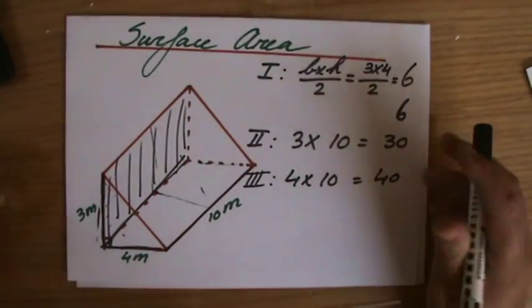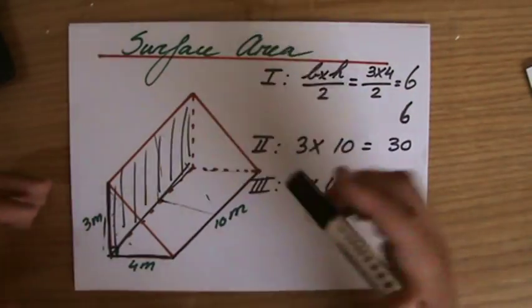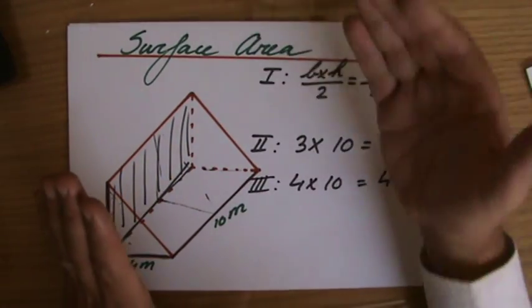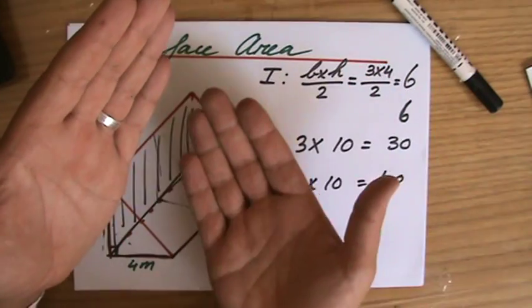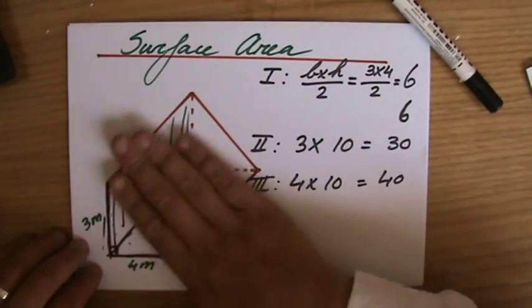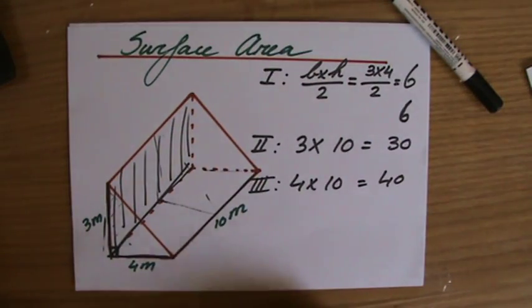So how many sides did I find now? How many areas did I find? 1, 2, 3, 4, which is 1, 2, 3, 4. So I've got them all except for 1. That's a big part over here.